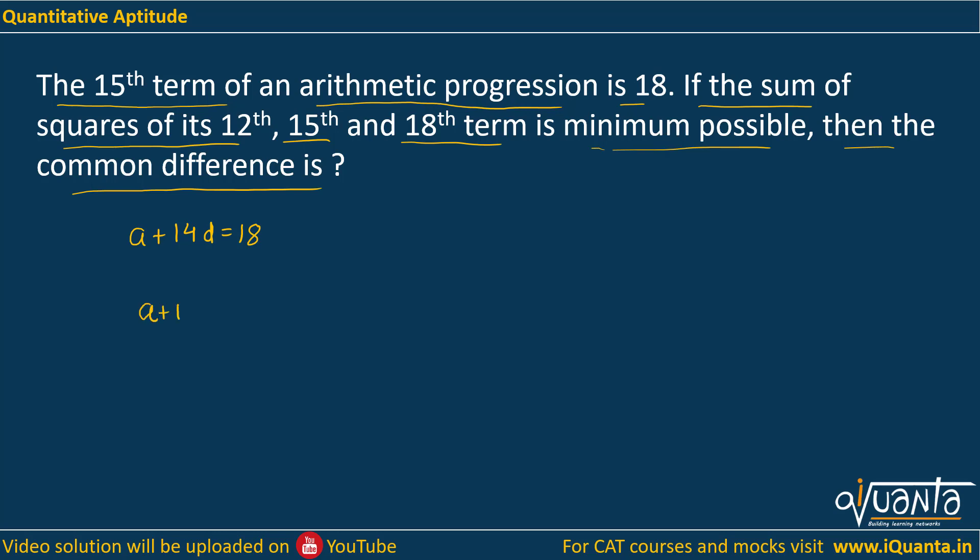So I can write it as: the 12th term will be written as (a + 11d)² then (a + 14d)² then (a + 17d)². We need to find out the minimum value of this term.